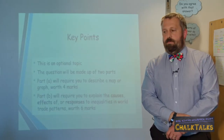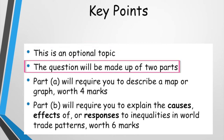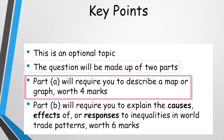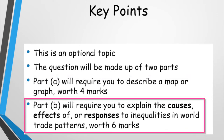A few key points. This is an optional topic, so please make sure that it is one of the topics that you have been taught in class. The question will normally be made of two parts. Part A will ask you to describe information from a map or graph relating to some aspect of trade or globalisation, and it will normally be worth four marks. Part B will require you to explain either the causes, the effects of, or responses to inequalities in world trade patterns, and this will normally be worth six marks.